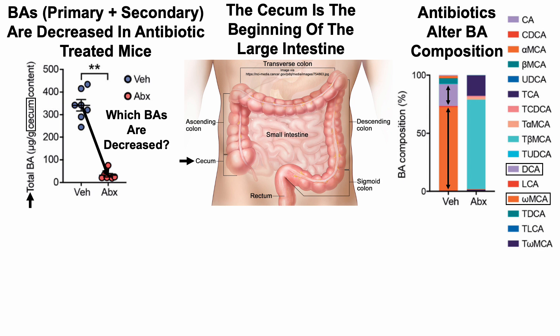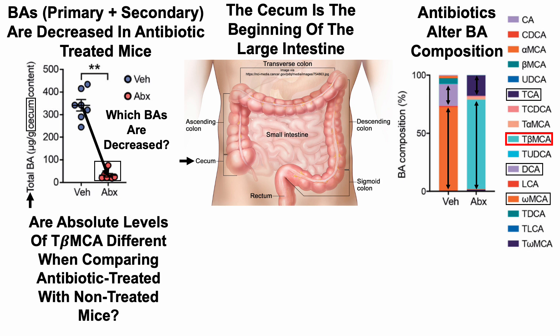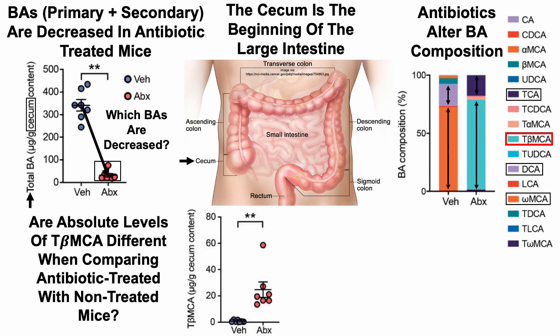In contrast, looking at bile acid composition in the antibiotic-treated mice, you can see a completely different color scheme, with the two major bile acids being tauro-cholic acid (TCA, in purple) and tauro-beta-muricholic acid (TB-MCA, in light blue). Now, if we only looked at bile acid composition in this figure, we would think that the levels may be the same. But remember, bile acid levels in the cecum were almost completely wiped out in the antibiotic-treated mice. So are absolute levels of tauro-beta-MCA different when comparing antibiotic-treated with non-treated mice?